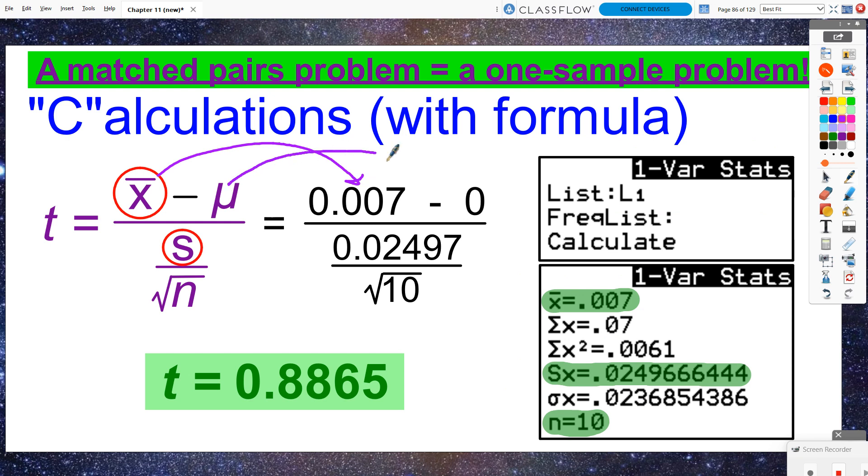My hypothesized mean is my null hypothesis, and that is zero. Then I plugged in my sample standard deviation and my sample size of 10. And I got a test statistic of 0.8865.